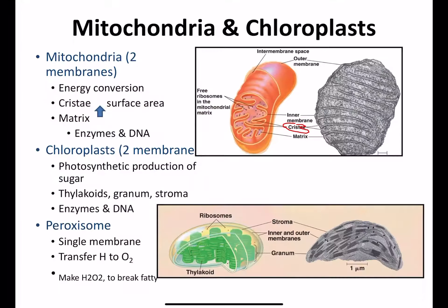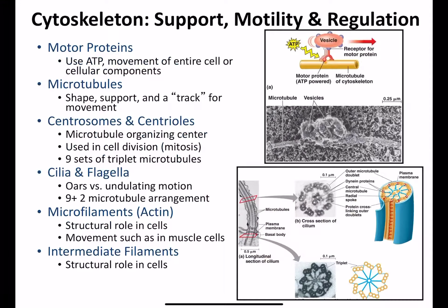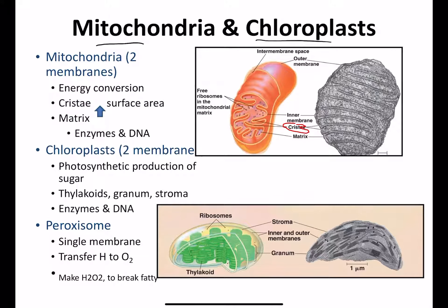For chapter six: mitochondria and chloroplasts — chapters 9 and 10 will cover them in depth. Key thing: mitochondria have two membranes and that's where you make the bulk of your ATP. Chloroplasts have the specific enzymes and components to make ATP as well as make glucose. Both of them have two membranes.